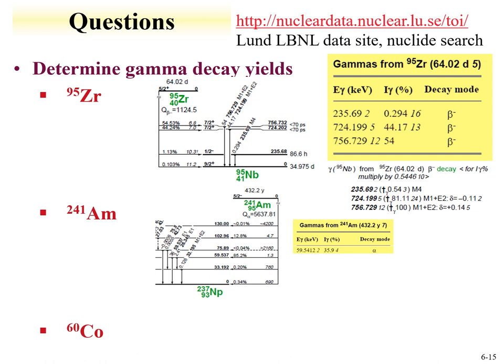Another example is cobalt-60. From the LB site, there are two intense photo peaks, each above 1,000 keV with yields on the order of 99%. From the decay scheme, cobalt-60's 5-plus state decays to a 4-plus state 99.925% of the time. There's a transition from the 2,505 keV excited state to the 1,332 keV excited state — that's the first photon at about 1,173 keV — and then de-excitation from the ~1.3 MeV excited state to the ground state gives the second photon. So cobalt-60 gives two photons each nearly 100% of the time and is readily observed by gamma decay.